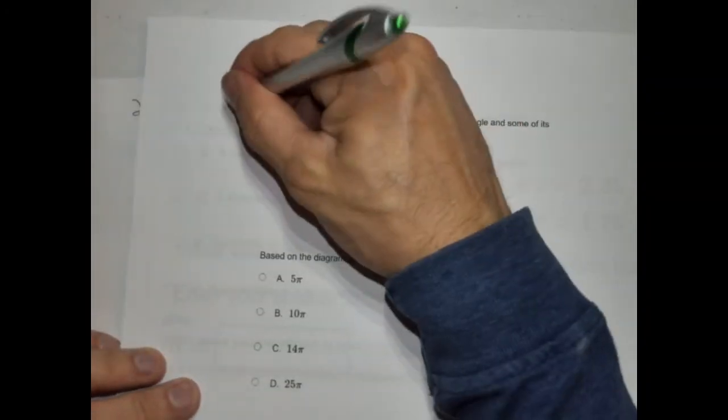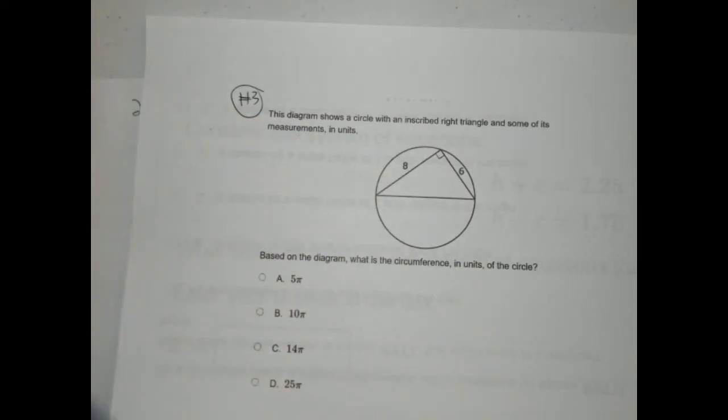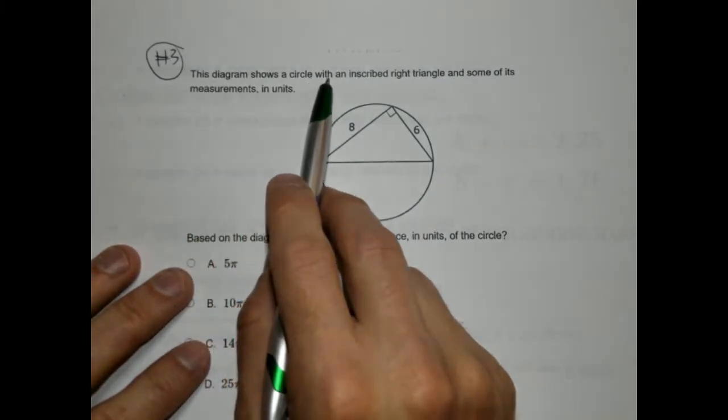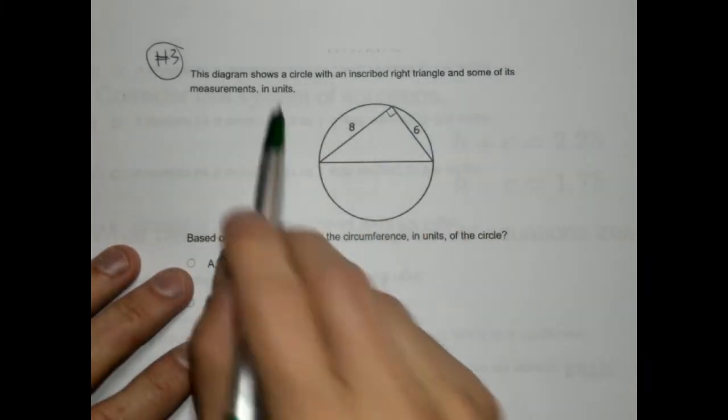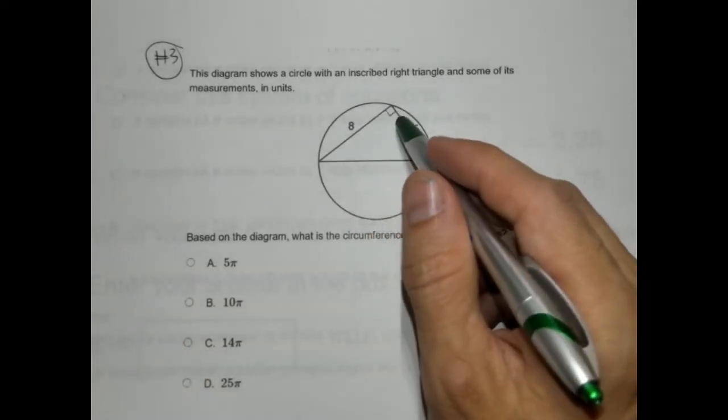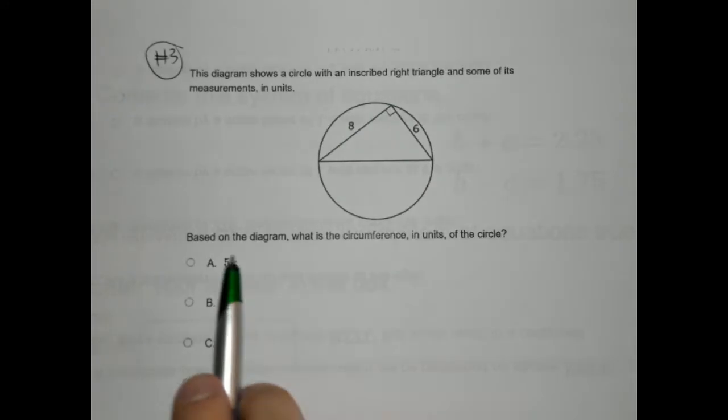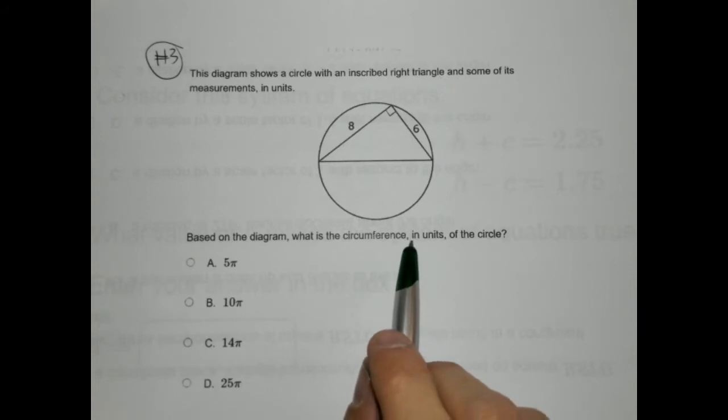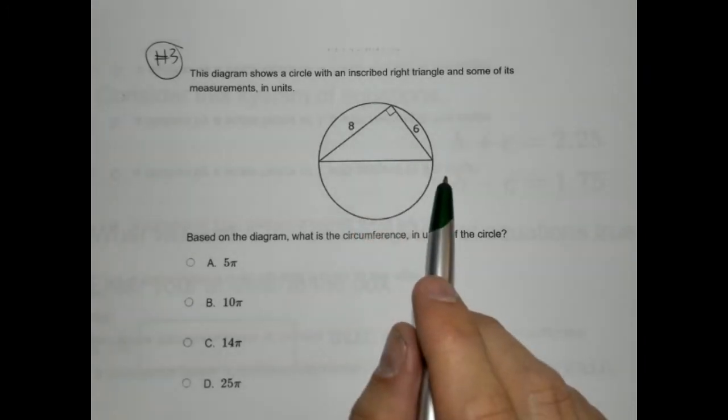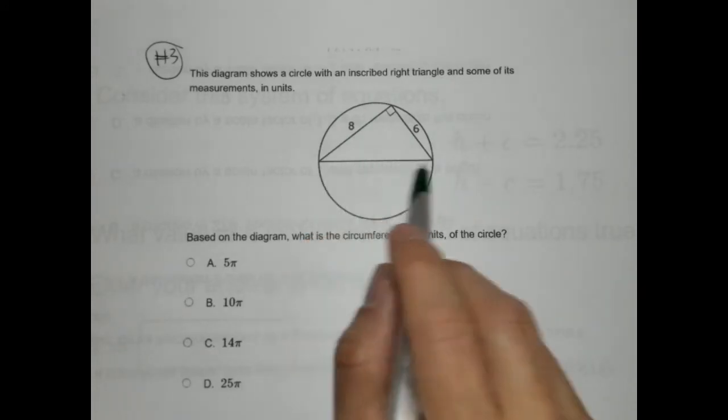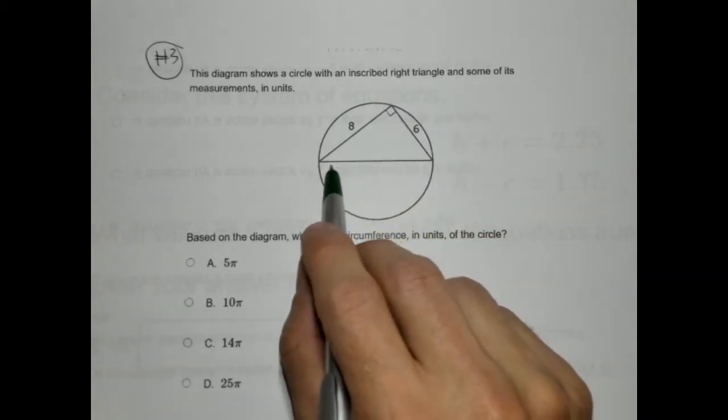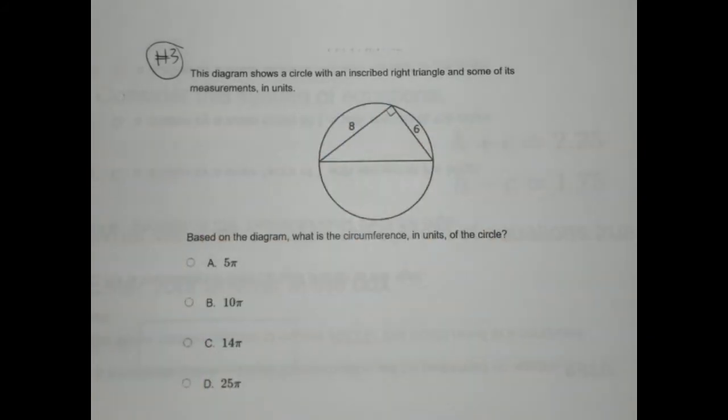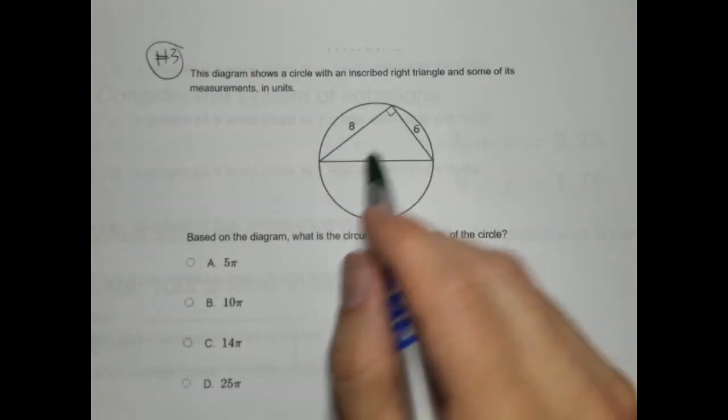Number 3. Oh, this is a really interesting one. I like this one. This one's a little weird. A diagram shows a circle with an inscribed right triangle, and some of its measurement in units. So we have a right triangle inside the circle, and all three vertices are on the circle itself. Based on the diagram, what is the circumference in units of the circle? We have an inscribed right triangle. So we want to find this missing side. And the reason for that is when you have an inscribed right triangle, the hypotenuse is going to be the diameter. So this is actually the diameter of the circle.